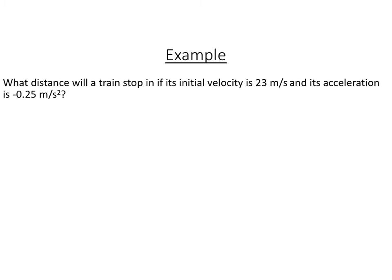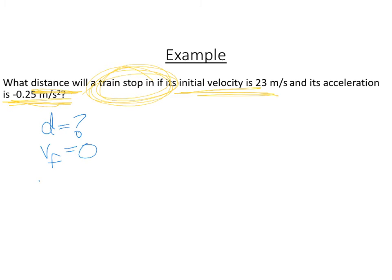Looking at this problem, wants to know what distance will a train stop, so one of those keywords, if its initial velocity is 23 and its acceleration is negative 0.25 meters per second squared. So I like to just make myself a little list. It looks like distance is the question. Will a train stop, so that's my final velocity. My initial velocity is 23, and my acceleration is negative 0.25. Now I need to look at all those equations and decide which one's the best one.